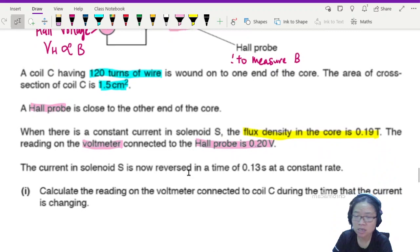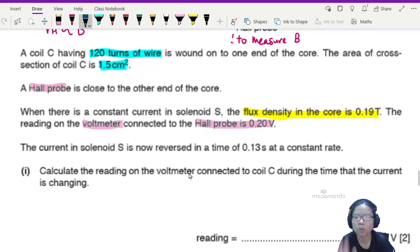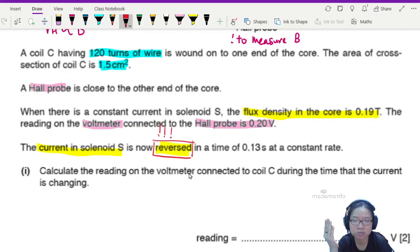Now I feel a bit confident. One voltmeter here is to measure hall voltage. If got hall voltage, means got magnetic flux. One voltmeter here is to measure whether that magnetic flux got changed or not. If this one got reading, it means that there's a change in magnetic flux linkage, meaning there's a change in the value of B, magnetic flux density. Calculate the reading on the voltmeter connected to coil C during the time that the current is changing. What did the current change? Current in solenoid S is reversed. Oh snap. If you have done the previous examples, you would know that, oh, reverse, exclamation point.